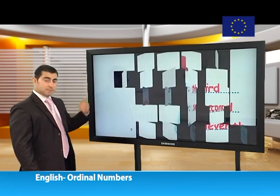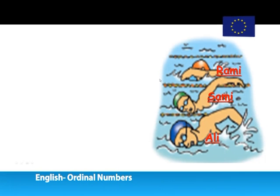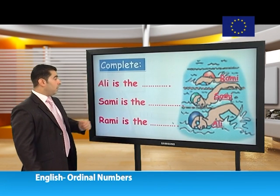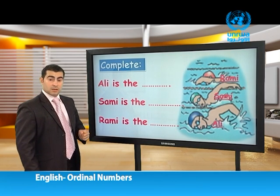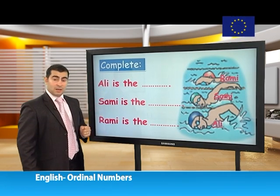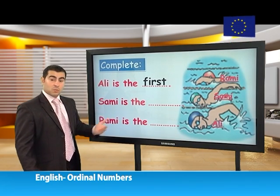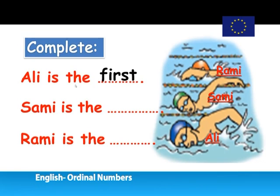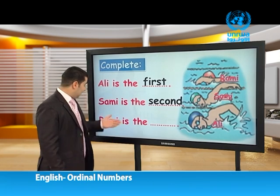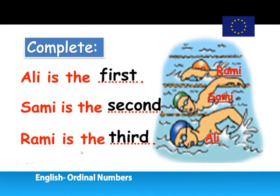Now, dear students, let's have a look at this race — a swimming race. This is Ali, Sami, and Rami. We will complete these sentences. Ali is the... — yes, Ali is the first. Now Sami — Sami is the second. And Rami — he's the last one, he's the third. Rami is the third. Thank you very much.